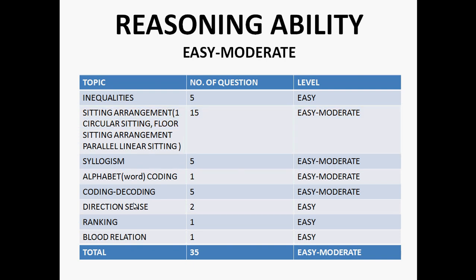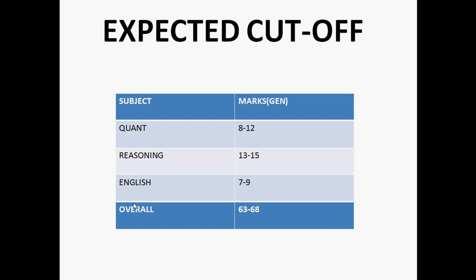Now let's see the reasoning section. There were 5 inequality questions which were easy. There were 3 puzzles: 2 seating arrangements — a circular seating arrangement and a parallel linear seating arrangement — and a floor arrangement puzzle. Overall, 15 questions were easy to moderate. There were 5 questions of alphabet coding which were easy to moderate, and 2 questions on direction sense, ranking, and blood relation, all of which were easy to moderate.